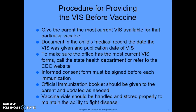Procedures for providing the VIS before the vaccine: give the patient the most current VIS available for that particular vaccine. Document in the child's medical record the date the VIS form was given and the publication date of that form. Make sure the office has the most current forms — you can refer to the website, which is kept updated. Make sure an informed consent form is signed before giving each immunization. An official immunization booklet should be given to the parent and updated as needed. Many care facilities now use electronic records as well.